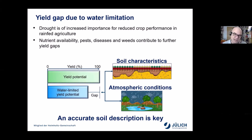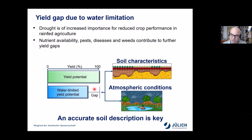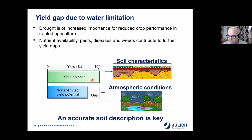To motivate the work, I'd like to start with the yield gap. I think certainly in the years that this PhD was done, everybody was aware that drought is of increased importance for reduced crop performance in rainfed agriculture. If we consider the yield potential of a particular site — if all management and water availability is perfect — we can maybe achieve 100% of the yield. If in a given year water is limited, this leads to the water-limited yield potential, and this creates a gap between what can potentially be achieved and what can be achieved given the weather conditions. But this yield gap does not only depend on atmospheric conditions — it also very much depends on soil characteristics. So if we want to tackle this yield gap, we need an accurate soil description.